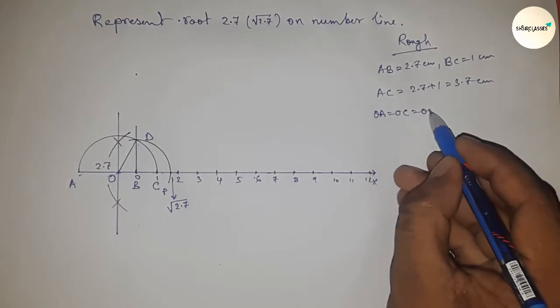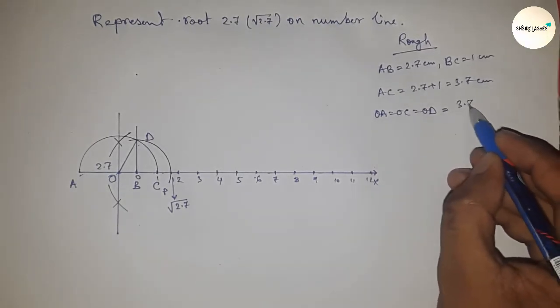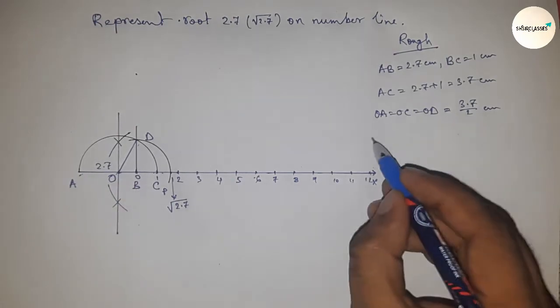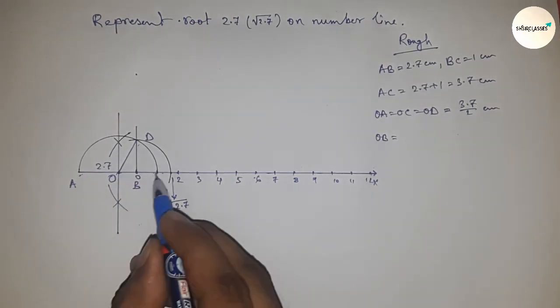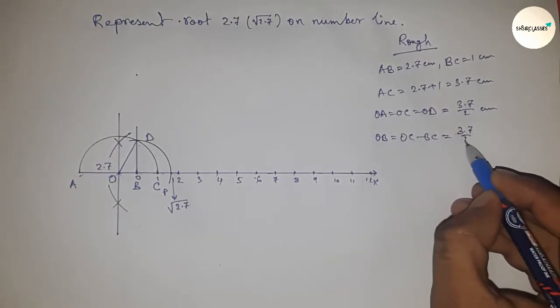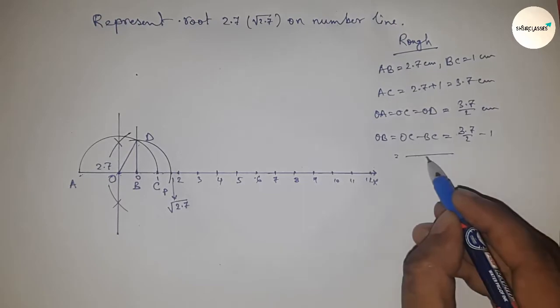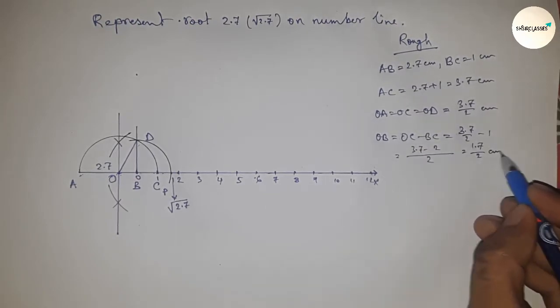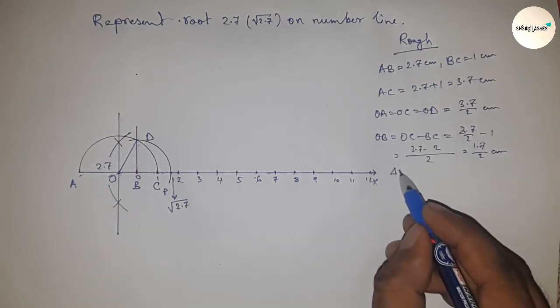Now OB equals OC minus BC. Putting the value of OC and BC and after calculating, this is 1.7 by 2 centimeter. Now, in right angle triangle OBD, from the Pythagorean theorem...